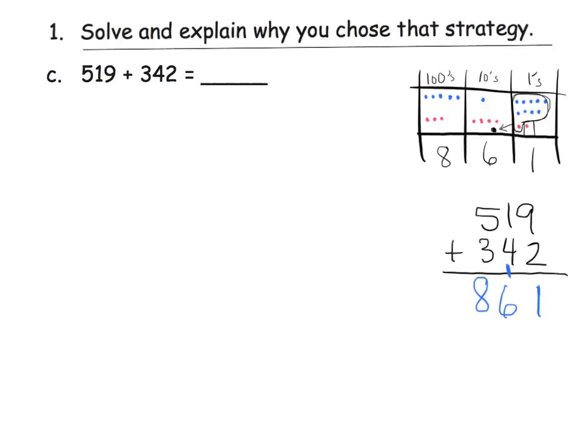We could do 519, and we could add 300, that gives us 819. Then we can add 40, and that gives us 859, and then we can add 2 more, and that gives us 861.